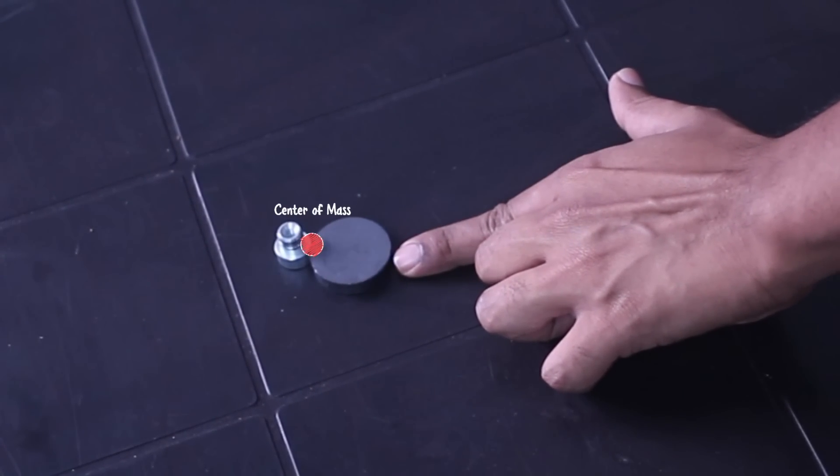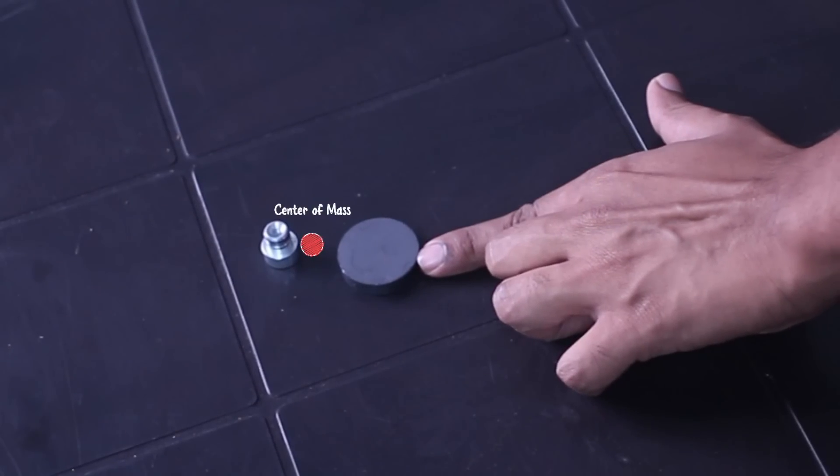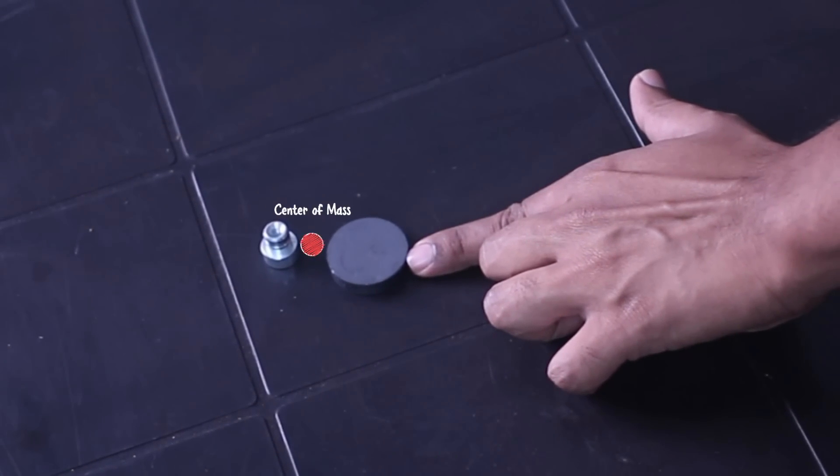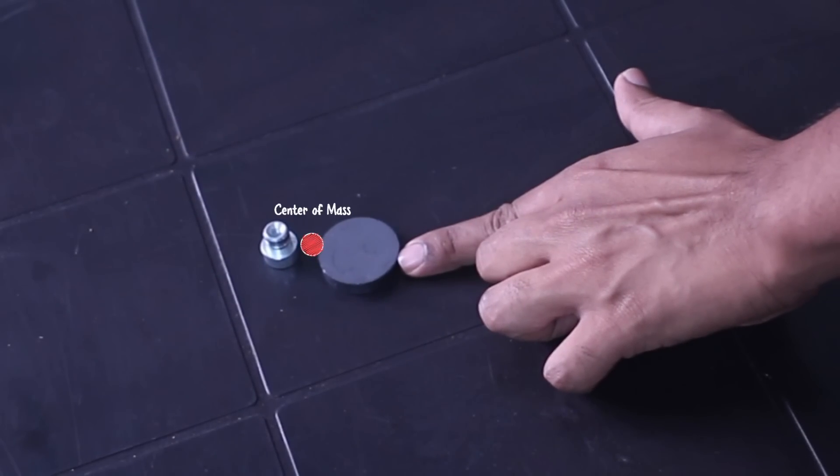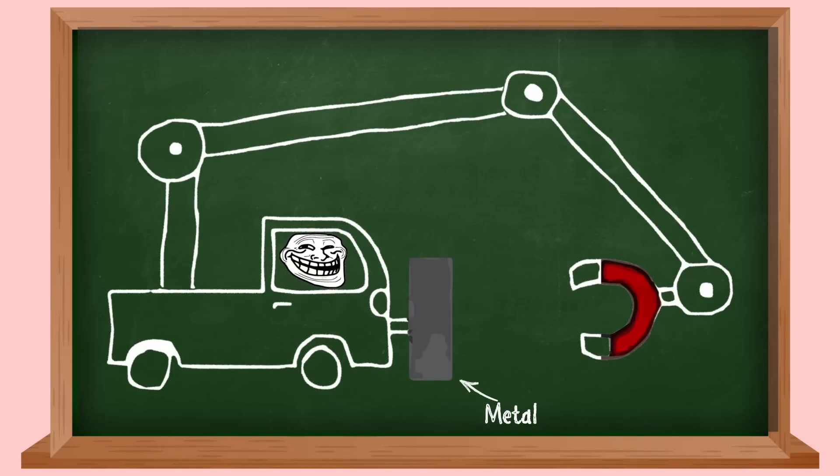And their center of mass, or the average position of both the masses, or the position of the system, remains in the same place. In fact, if I give you the masses of both these objects, you can analyze the video frame by frame and make sure their center of mass is always in the same position. Now let's come back to this meme.